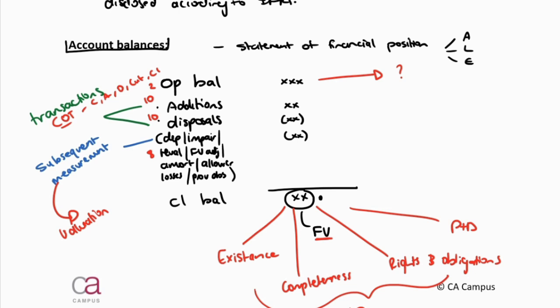This shows how you could potentially be asked a question out of fifty marks on a balance — marks for general procedures (around ten), for transactions (around twenty), and then for account balance assertions (around twenty). There's a lot of work involved when we're doing account balances. So let's go and have a look at your account balance assertions.